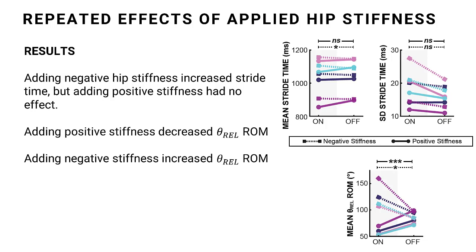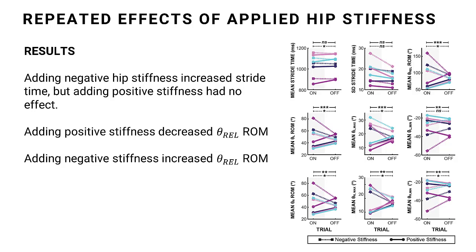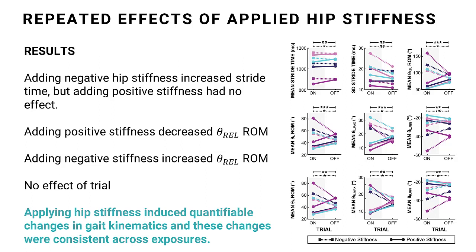Turning to the spatial measures, we found that adding positive stiffness decreased the range of motion of the relative angle between the two legs, and adding negative stiffness increased this range of motion. Importantly, this was consistent across both legs—the range of motion of each individual leg either increased or decreased depending on whether negative or positive stiffness was applied, respectively, and their maximum and minimum values follow this pattern. In addition, the effect of either adding positive or negative stiffness did not change across trials. Thus, we conclude that applying hip stiffness induced quantifiable changes in gait kinematics, and these changes were consistent across exposures.